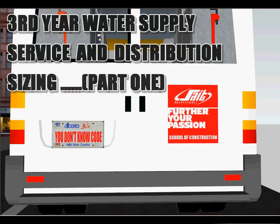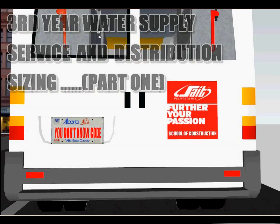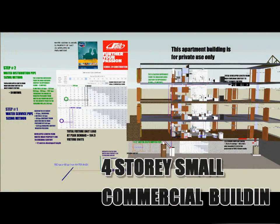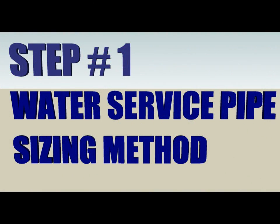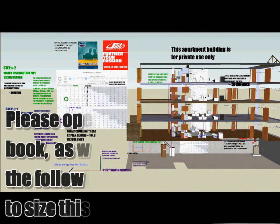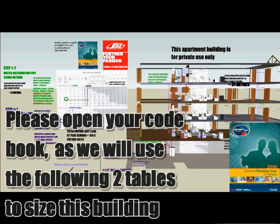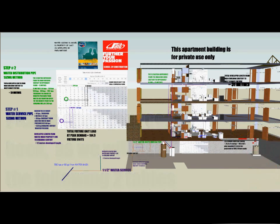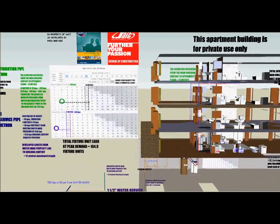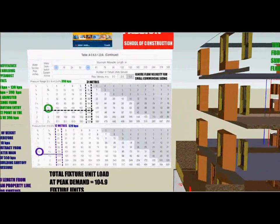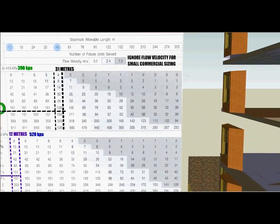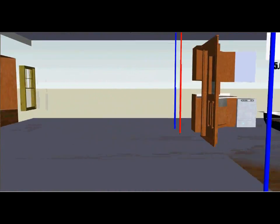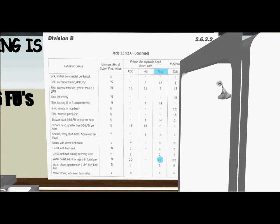Third Year Water Supply Service and Distribution Sizing, Part 1. We will use a four-story small commercial building to size the water service and the distribution pipe. Step 1: Water Service Pipe Sizing Method. Please open your code book as we will use the following two tables to size this building. Table A2631 will be used to size the water service and the distribution pipe. Table 26328 will be used to size the fixture unit load for each fixture.